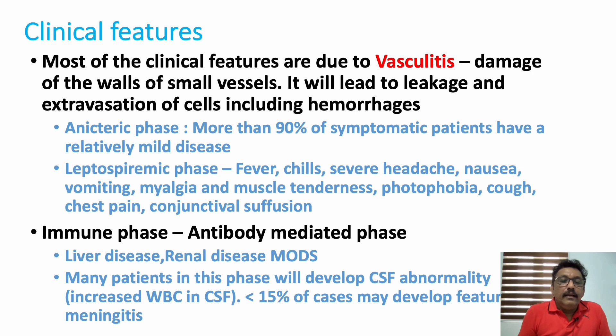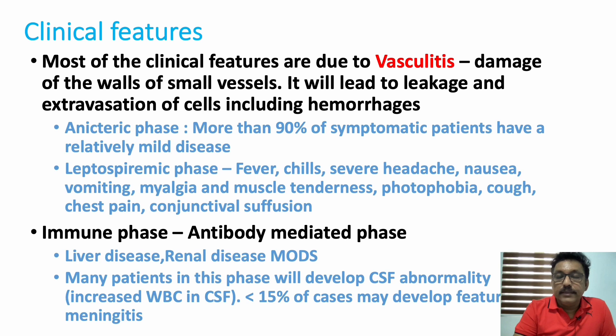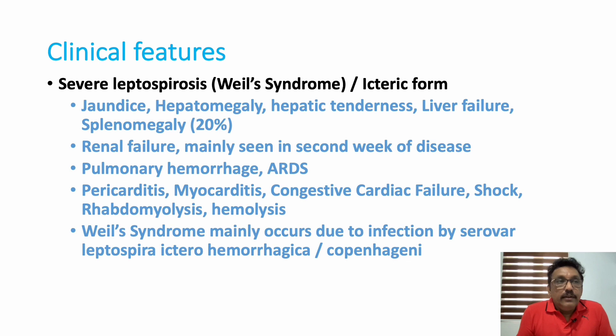Many patients can have CSF abnormalities, but they may not develop meningitis or encephalitis — rarely do patients progress to meningitis or encephalitis. Routinely we don't perform CSF study in leptospirosis unless there are clinical features of meningitis or encephalitis. In the first phase it is only fever, muscle pain, and conjunctival suffusion; the second phase — Weil's syndrome — presents with hepatomegaly, hepatic tenderness, and liver failure.